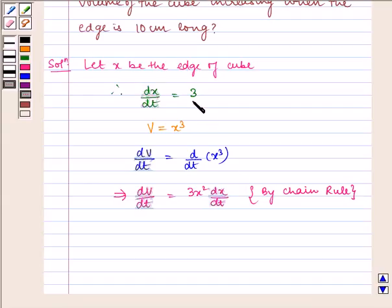dx/dt is given to us as 3, so this implies dV/dt = 3x² × 3 = 9x².